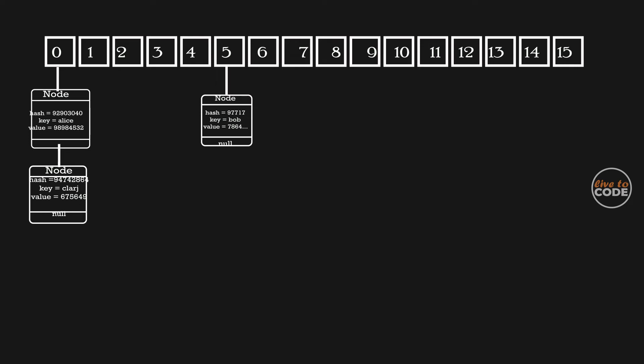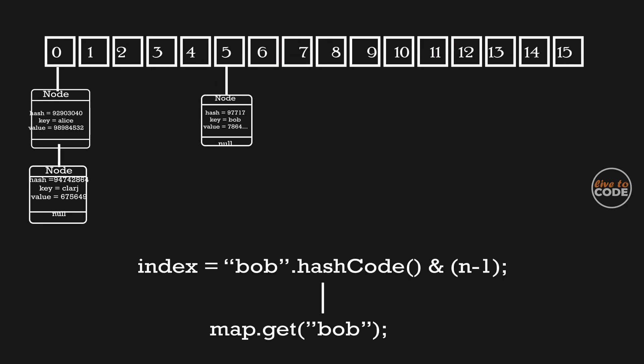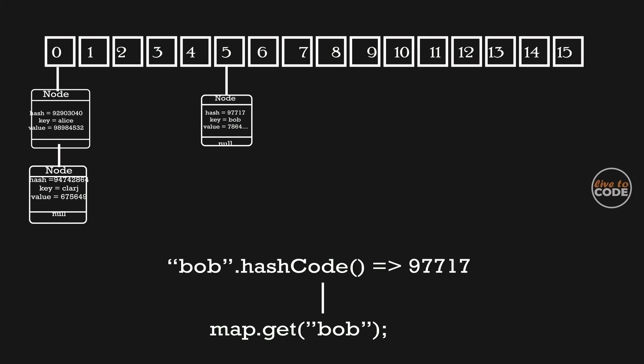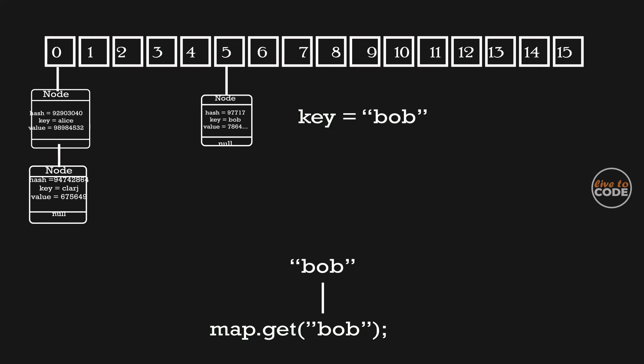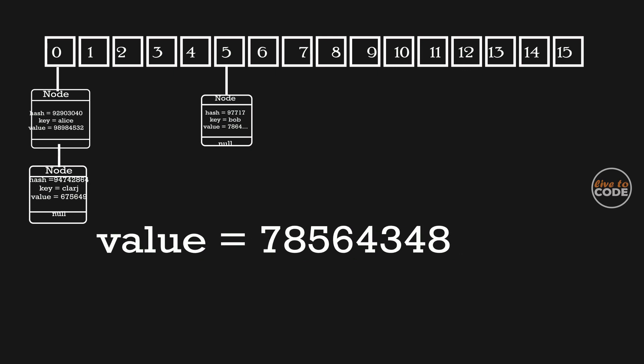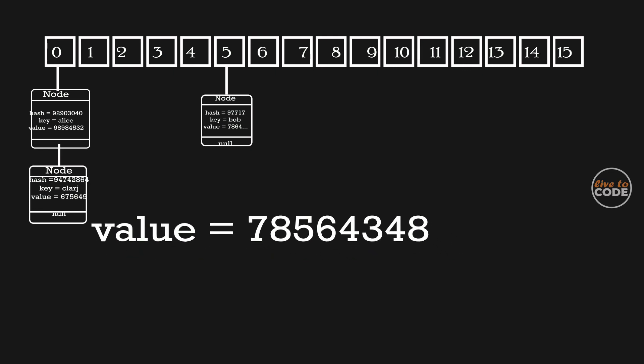Now let's see what happens when we call the get function in HashMap. The hash code will be calculated for the given key, and the index will be calculated from the hash code — here the index value is 5. So we get the node from index 5 and check the hash value of that node with the current key's hash value using the equals method. If both are the same, we then check the node's key value with the given key value. If both match, the node's value is returned — this is the value for the given key.